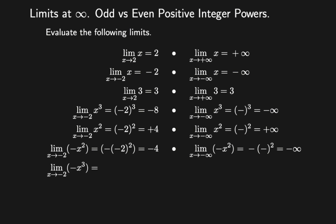Find the limit of minus x cubed as x approaches minus 2. If you substitute x with minus 2, you will get a negative number. Then add the negative sign: minus times minus gives you a positive number. The answer is positive 8.